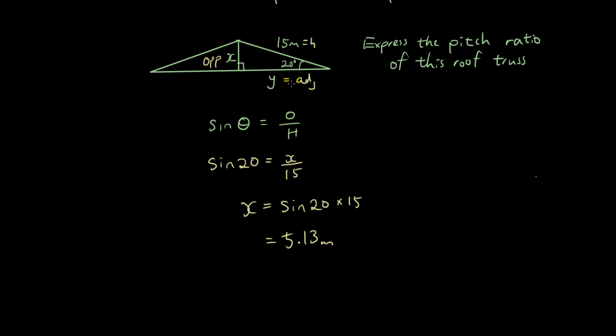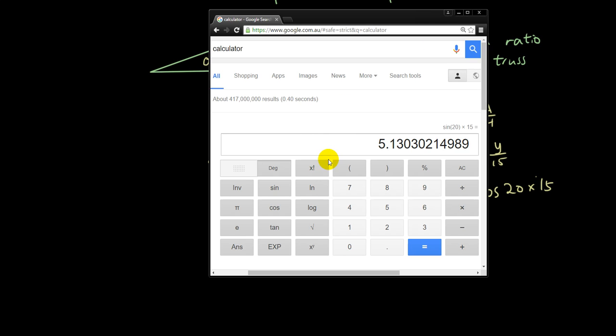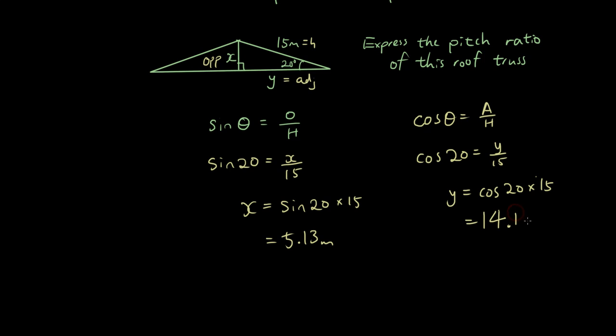Now let's do the next one. We have the adjacent to calculate, so let's do cosine theta equals adjacent over hypotenuse. Cosine 20 equals y over 15, so y equals cos 20 times 15. Put that into the calculator: cos 20 times 15, and the answer is 14.1 meters rounded to two decimal places.